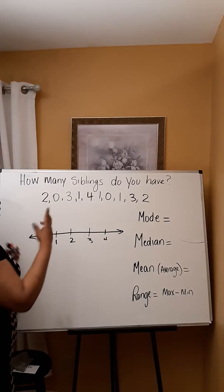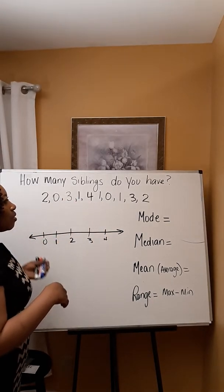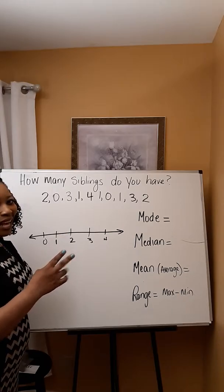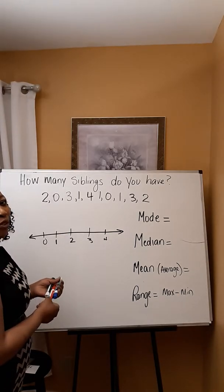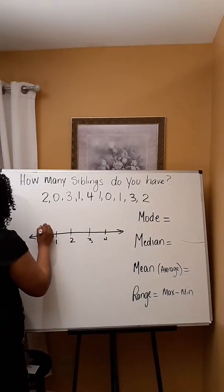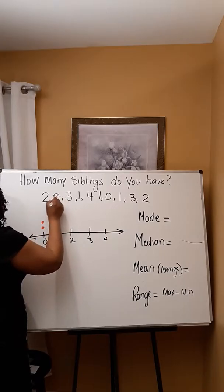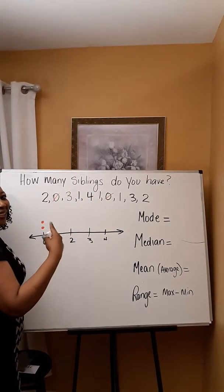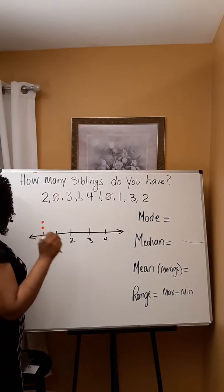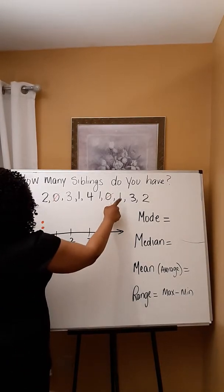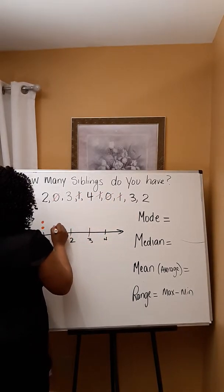As you can see, there are two occurrences of zero — that means two students had no siblings — so I'm going to put two dots above zero. I like to cross it out as I do it because it helps to keep everything nice and clean. There are three ones, so I'm going to put three dots.